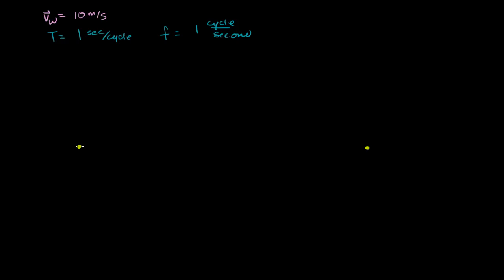Let's think about where the crest was that the stationary source emitted exactly 1 second ago. Well, it emitted the crest 1 second ago and it's moving outward radially at 10 meters per second. So if it emitted it 1 second ago, it's going to be 10 meters radially outward from the source — right over there.